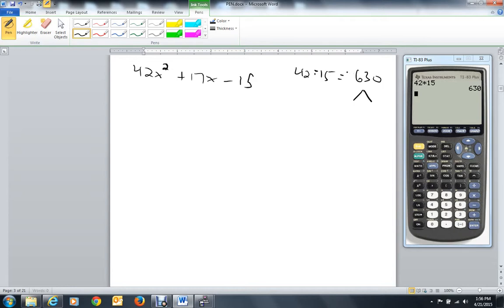Now how would you find factors of negative 630 that add up to positive 17? Let me show you what the calculator can do for you. I'm going to type in negative 630 divided by x, and I want to keep that x plus y1 in there because that's going to be our B column. Let's go to second graph, which is the table.